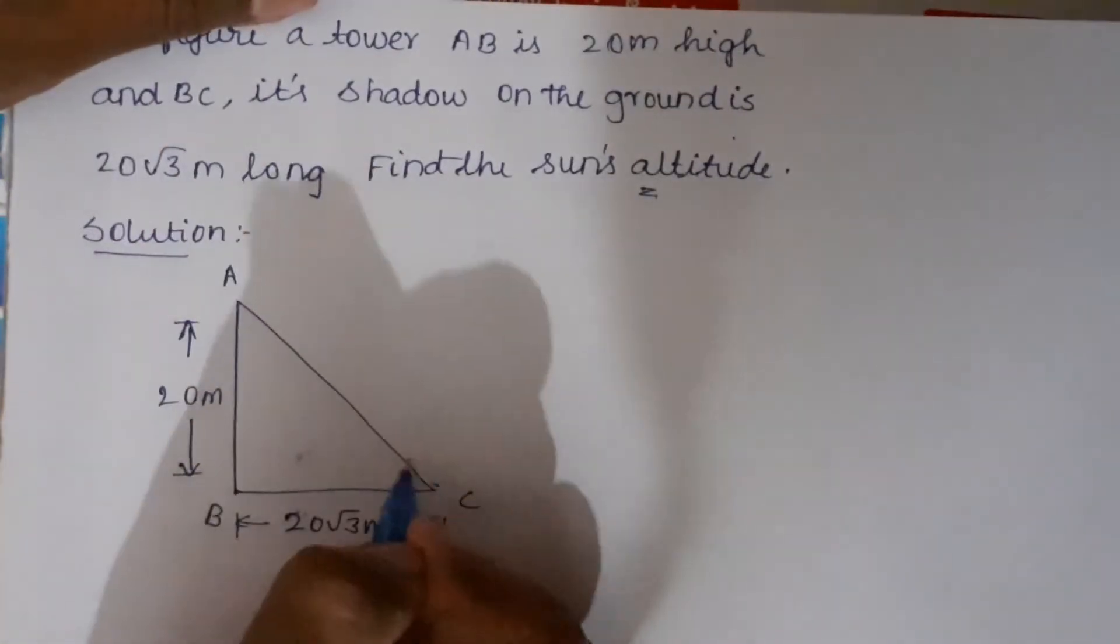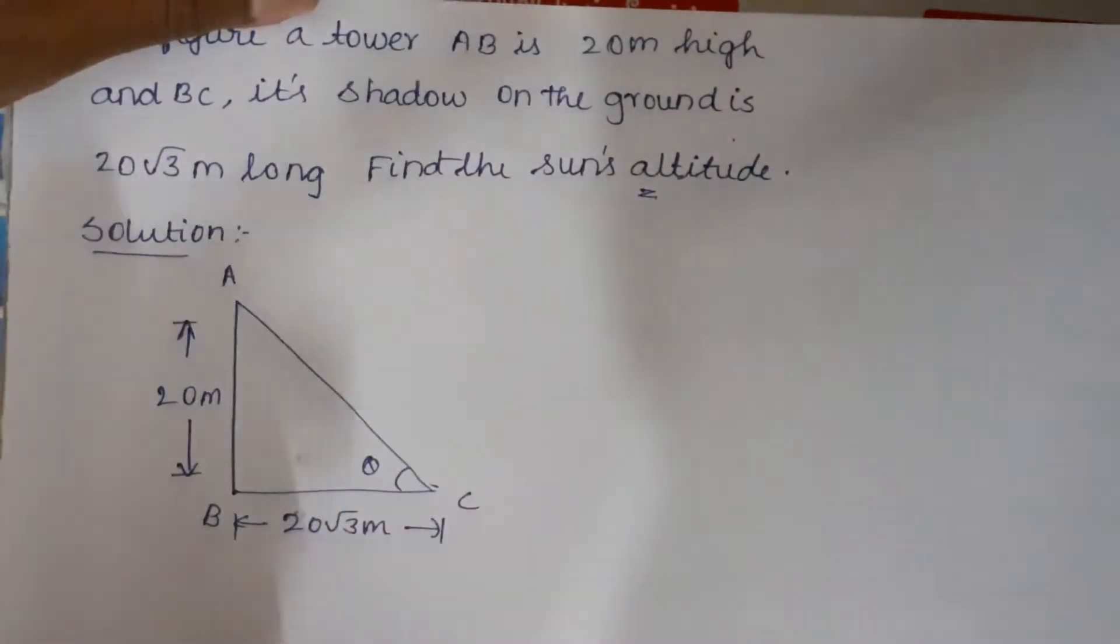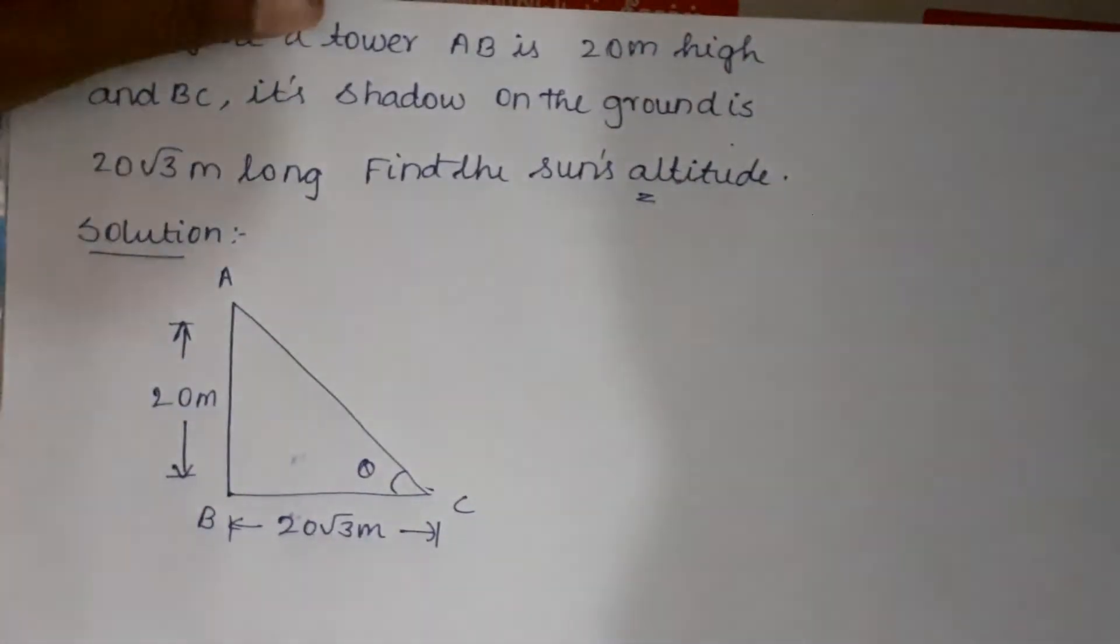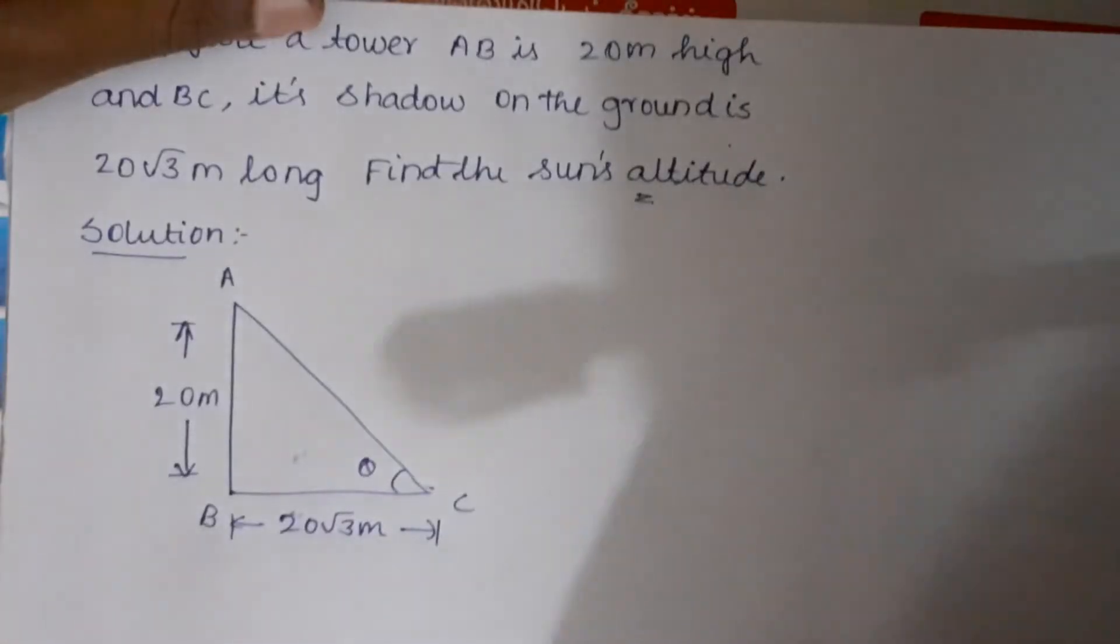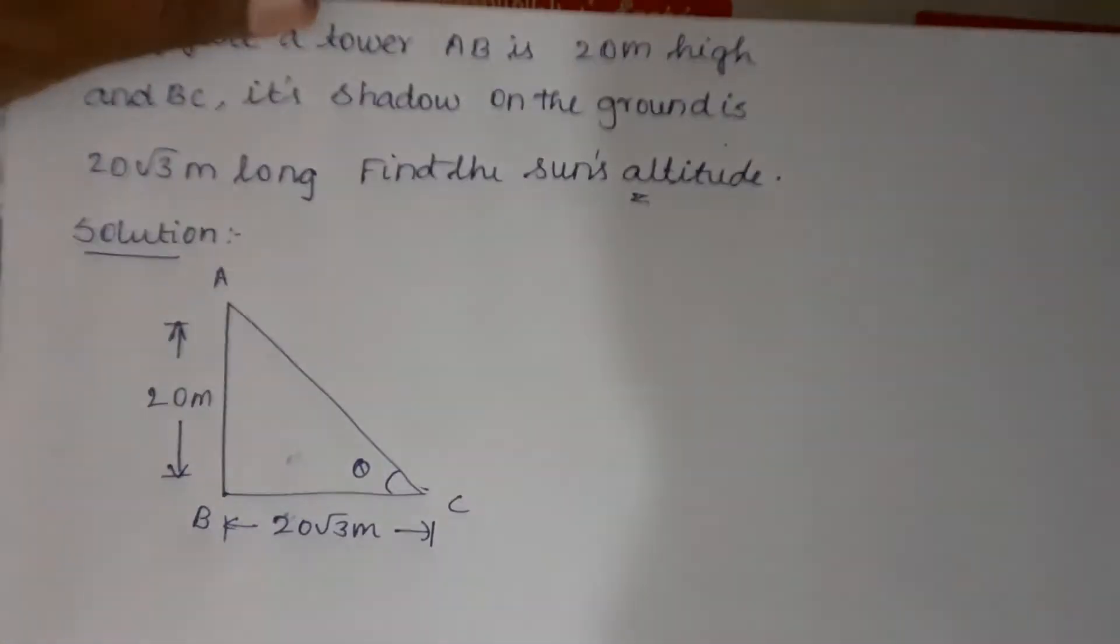We need to find the angle of elevation, which is theta. Since we have the opposite and adjacent sides, we'll use the tan theta formula.